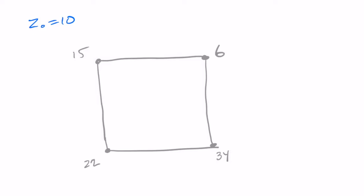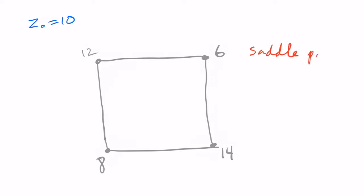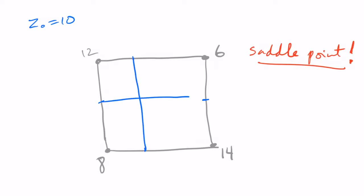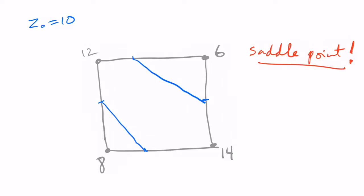For a raster, the cells are squares, and the exact same idea applies: we linearly interpolate along the four edges of a square to find intersections at elevation 10 and then join them. The only problem is that with a square we can have an ambiguity at a saddle point. If we extract four intersections along the edges, we need to be careful to join them so that the contour lines do not intersect. Both ways of joining are valid, but intersecting contour lines must be avoided.